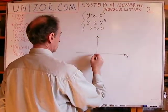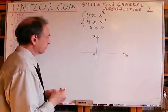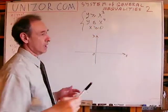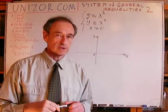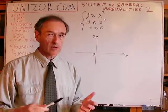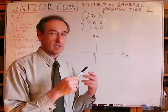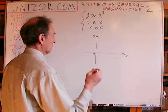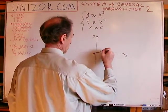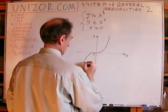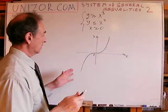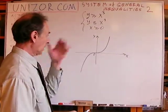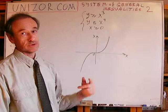We are talking about Cartesian coordinates, rectangular coordinates. Now, if you see an inequality like this, what I usually recommend is to start with the equation. Y is equal to X cubed. This curve divides the whole plane into two parts. On the curve itself, Y is equal to X cubed.